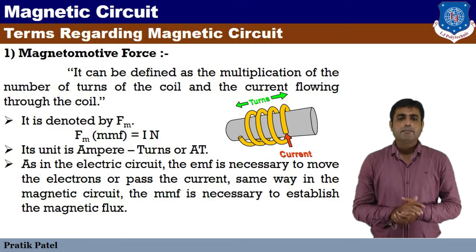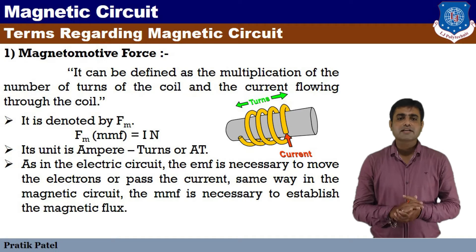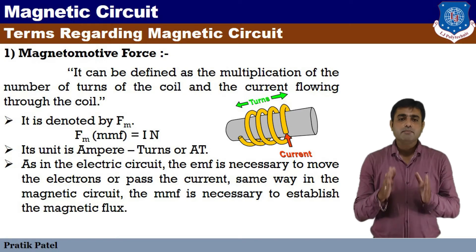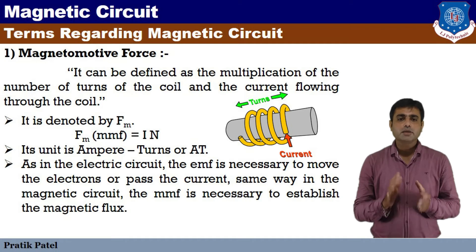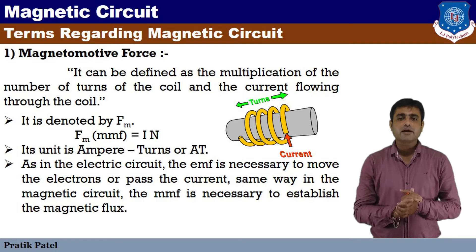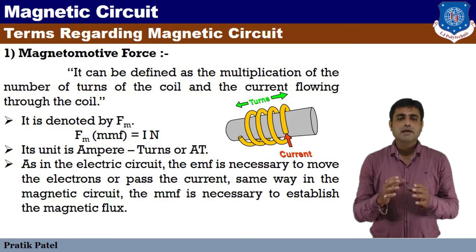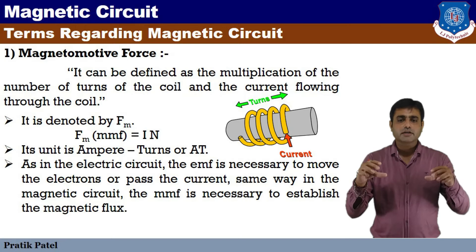First of all, magnetomotive force, which we call MMF. As in the electrical circuit we need EMF, in the magnetic circuit, magnetomotive force is very important. Magnetomotive force can be defined as the multiplication of the number of turns of the coil and the current flowing through the coil.